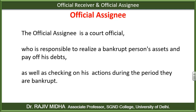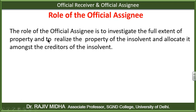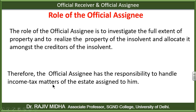As well as checking on his actions during the period they are bankrupt — इस दौरान उस व्यक्ति की सारी activities पर नज़र भी यही व्यक्ति रखेगा. The role of Official Assignee is to investigate the full extent of property and to realize the property of the insolvent — वो property को बेच के पैसा recover करेगा — and allocate it among the creditors of the insolvent. Therefore, the Official Assignee has the responsibility to handle income tax matters of the estate assigned to him — इस case में official assignee debtor के income tax matters को भी handle करेगा.